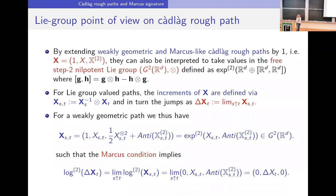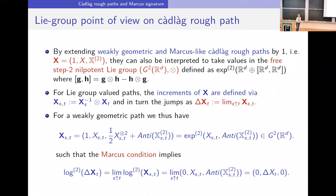You can adopt a Lie group point of view by extending the pair by one; then this Cadlàg rough path takes values in the free step-two nilpotent Lie group with respect to the tensor product — the exponential image of ℝ^d and the direct sum with anti-symmetric matrices. The Marcus condition means the increments defined via the group inverse give an exponential image, and taking the logarithm you see that only the jumps from the true path give a contribution.